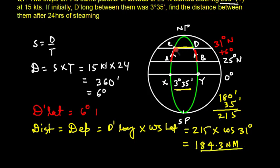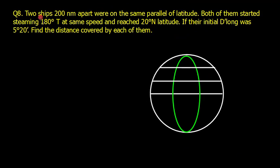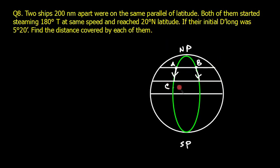So 184.3 nautical miles is the distance between ships C and D after they have sailed for 24 hours. Now for the next problem: two ships are 200 nautical miles apart on the same parallel of latitude, both steaming on course 180° — heading south. Ships A and B steam south to reach 20°N latitude.